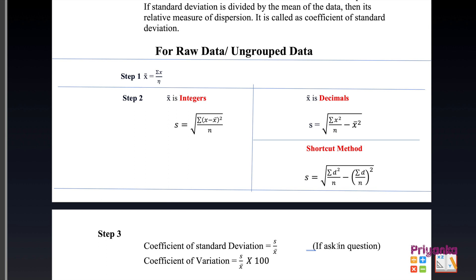Confirm by reading the question whether the coefficient of standard deviation is asked or not, as many questions do not ask for it. If the coefficient of variance is asked, the answer is expressed as a percentage using the same standard deviation formula multiplied by 100. All this information was for raw data.